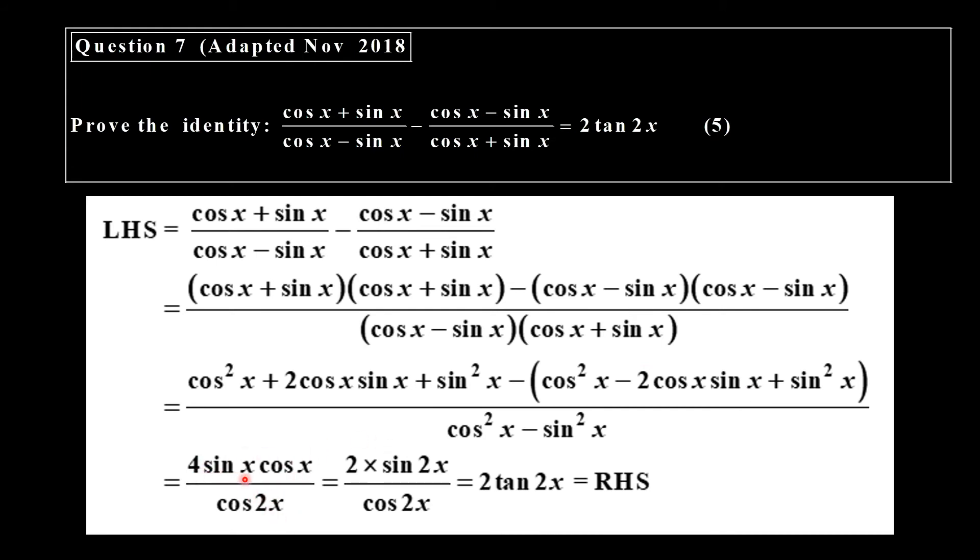Now 4 sin x cos x is actually two of these sin double angle. And cos squared minus sin squared is just cos of 2x. That's an identity on the formula sheet. And sin over cos becomes tangent.